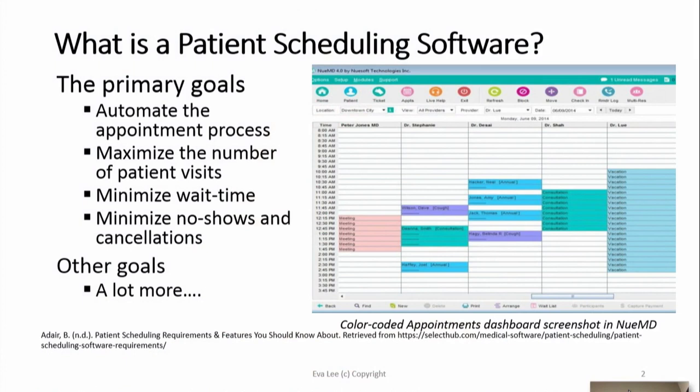If you look at what a scheduling system is — this actually partly answers Dawn's question about why we need one — it's really a new feature in hospitals. The key of patient scheduling software is to automate the appointment process, maximize the number of patients you can take care of, and reduce wait time. You also want to minimize no-shows and cancellations.